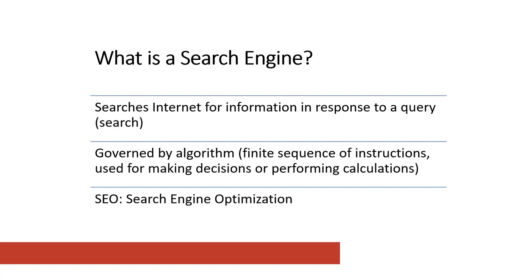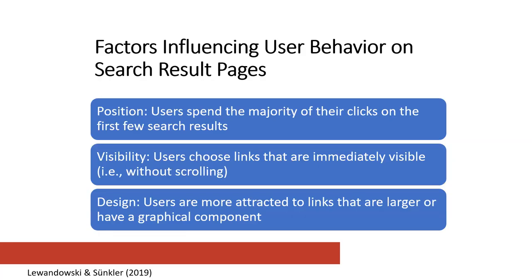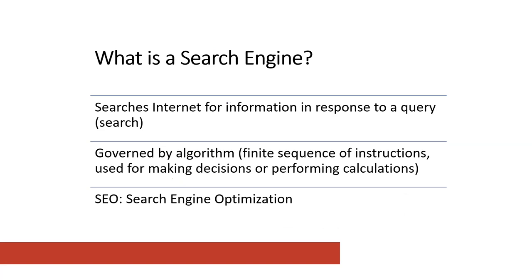If you remember how users behave when they're doing their searches, it is very important that if you are trying to advertise or do any kind of outreach, your web pages come up on Google's first page of search results, are immediately visible, and have some sort of design component. The more clicks you get on your link, the better chance you have of influencing the user's behavior — whether to sell them a product or service, or to convince them to believe or vote in a certain way. That's all search engine optimization.